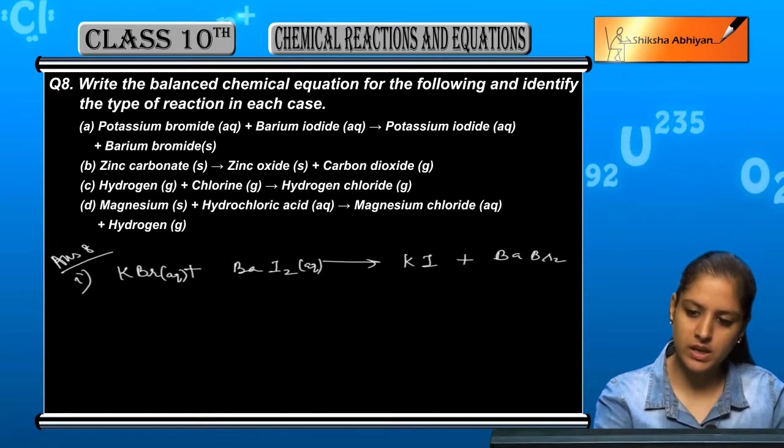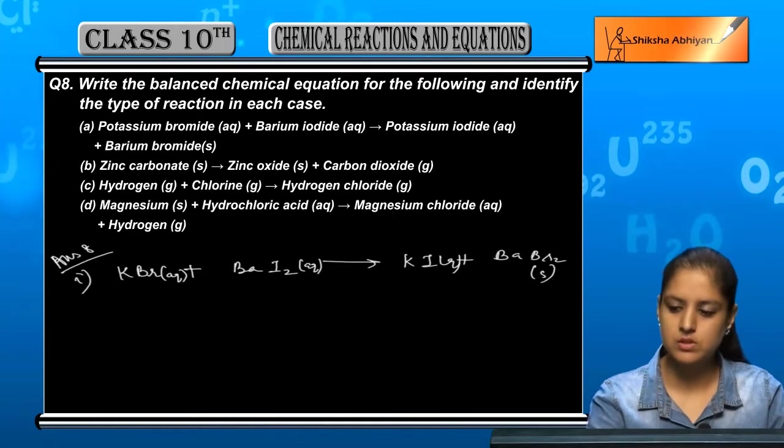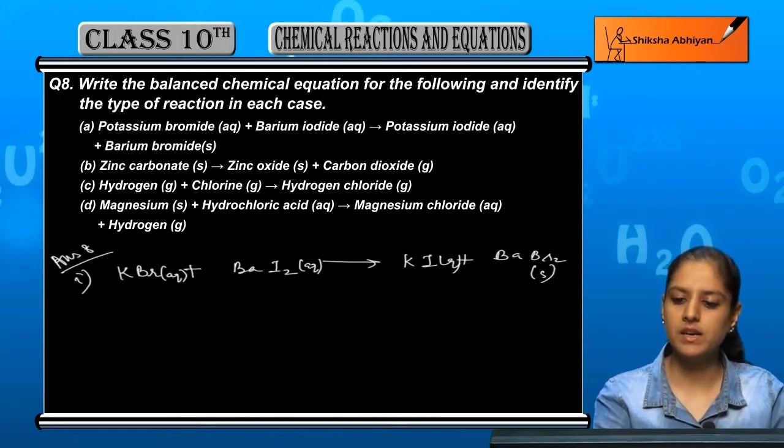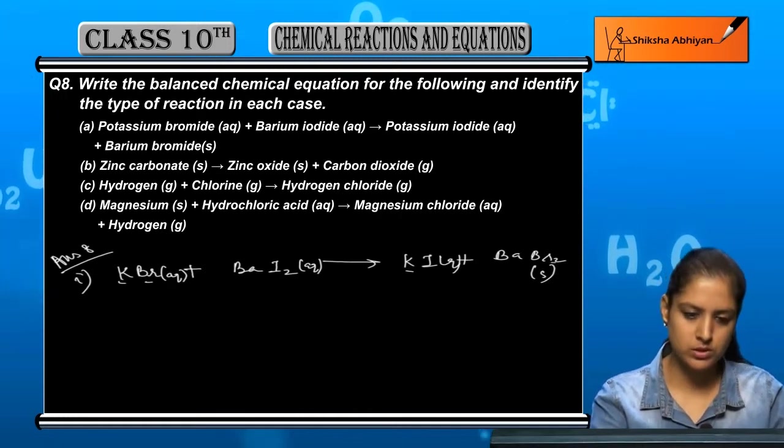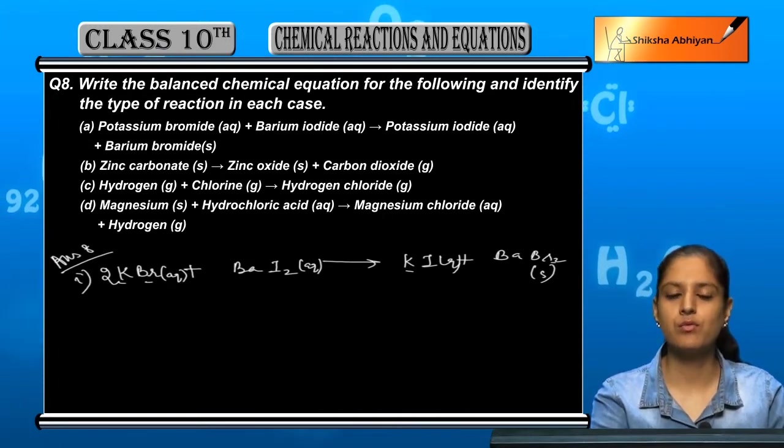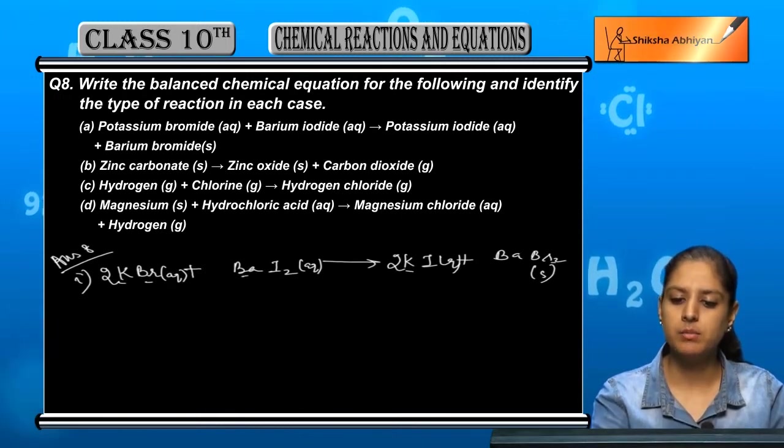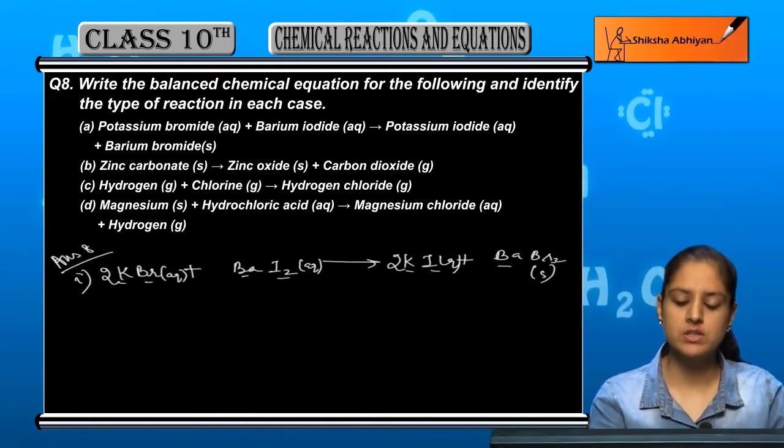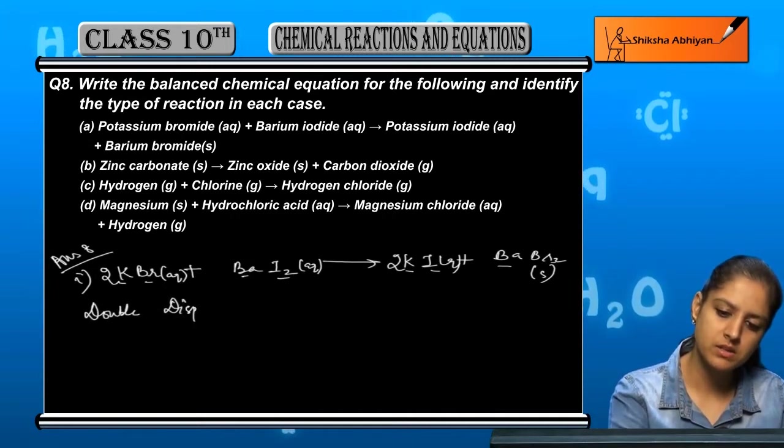So let us now balance it. To balance, K and K, potassium and potassium... So this is a balanced equation and this is a double displacement reaction.